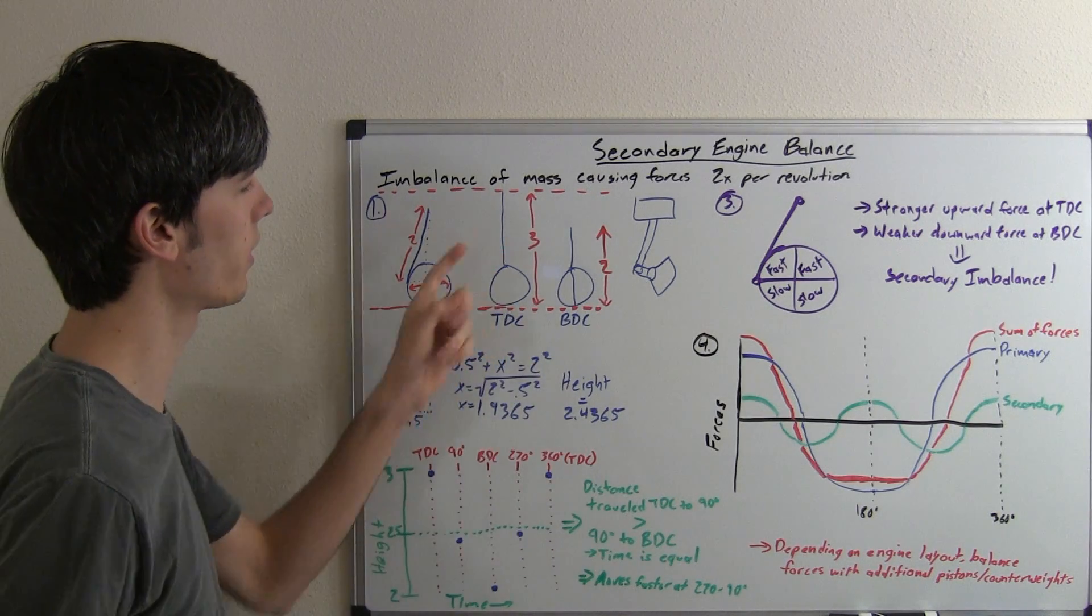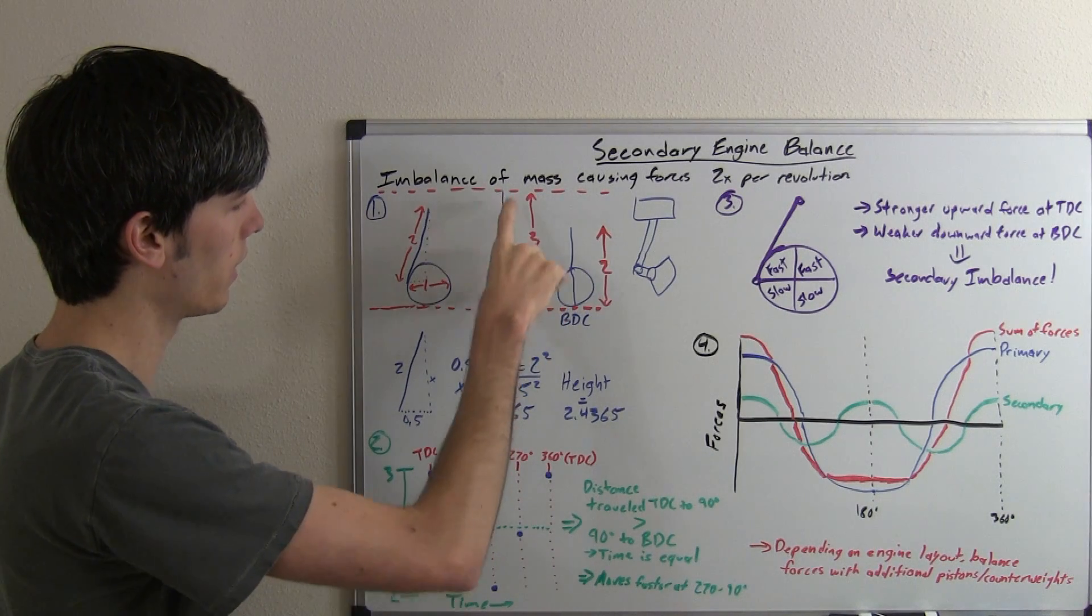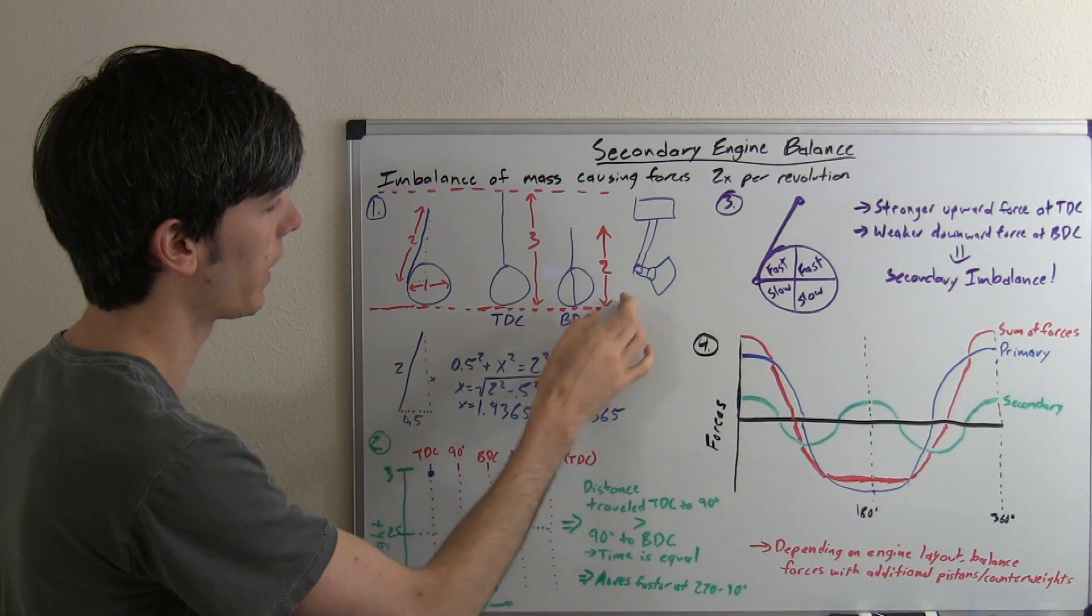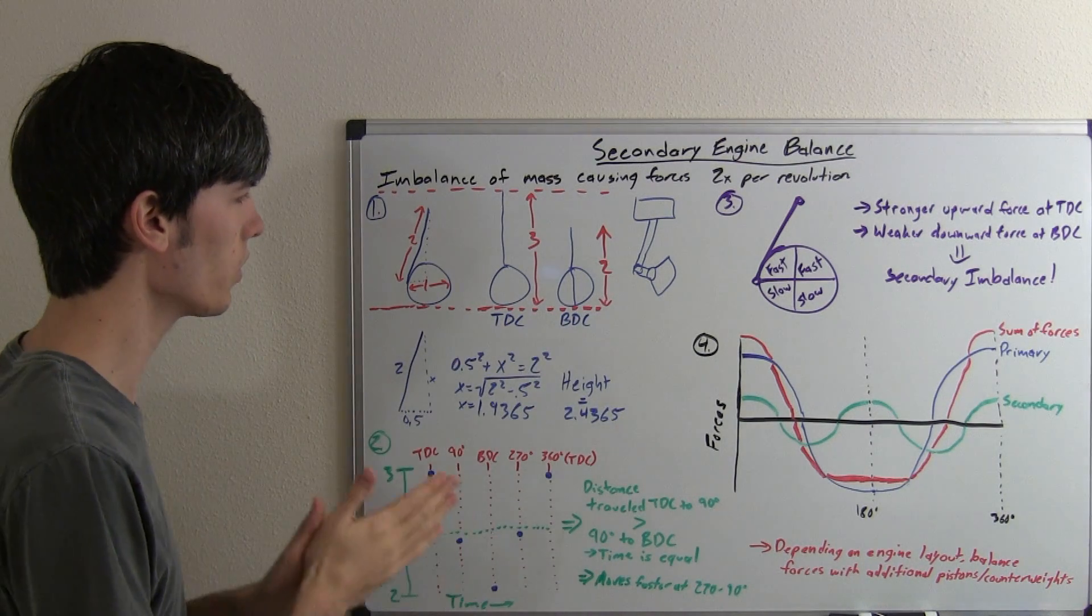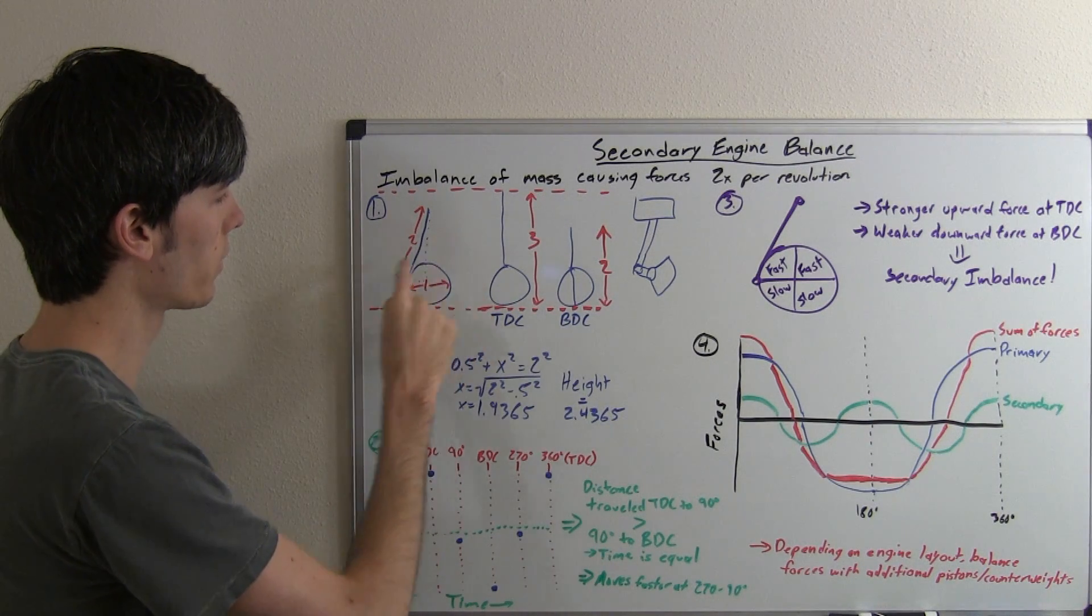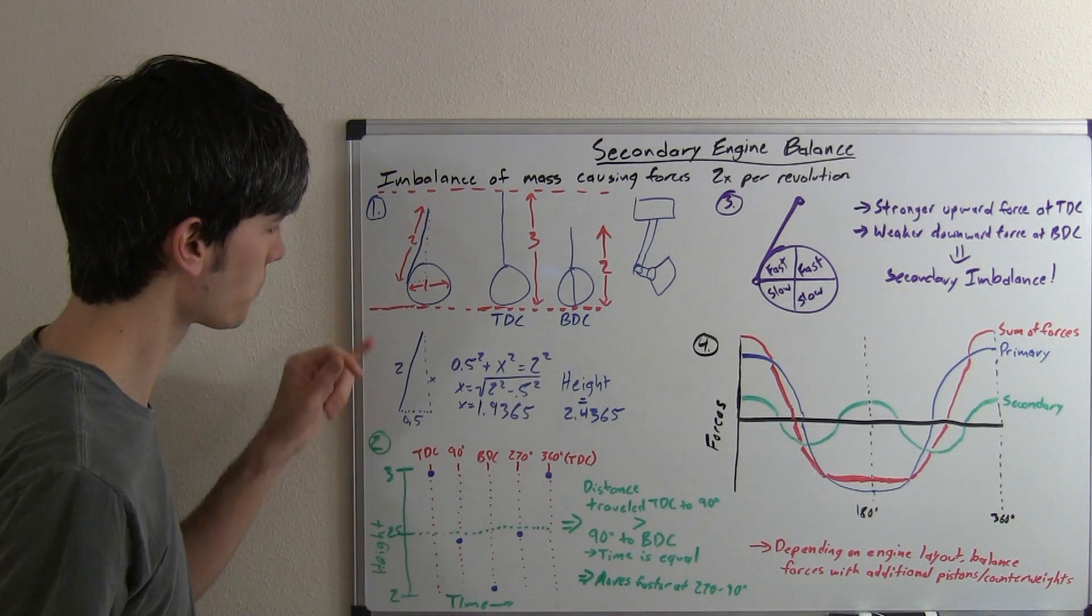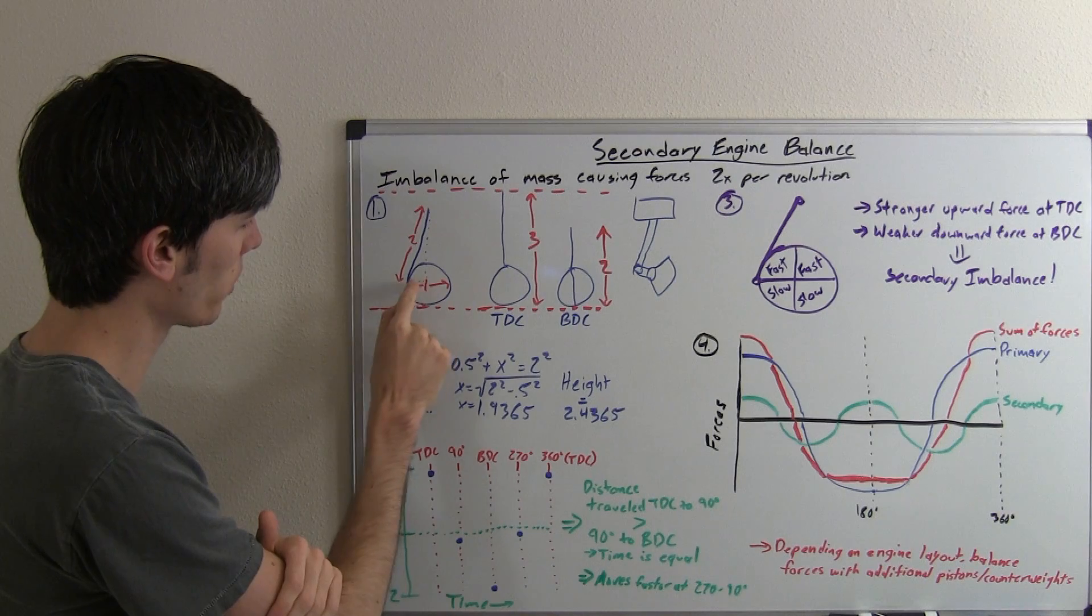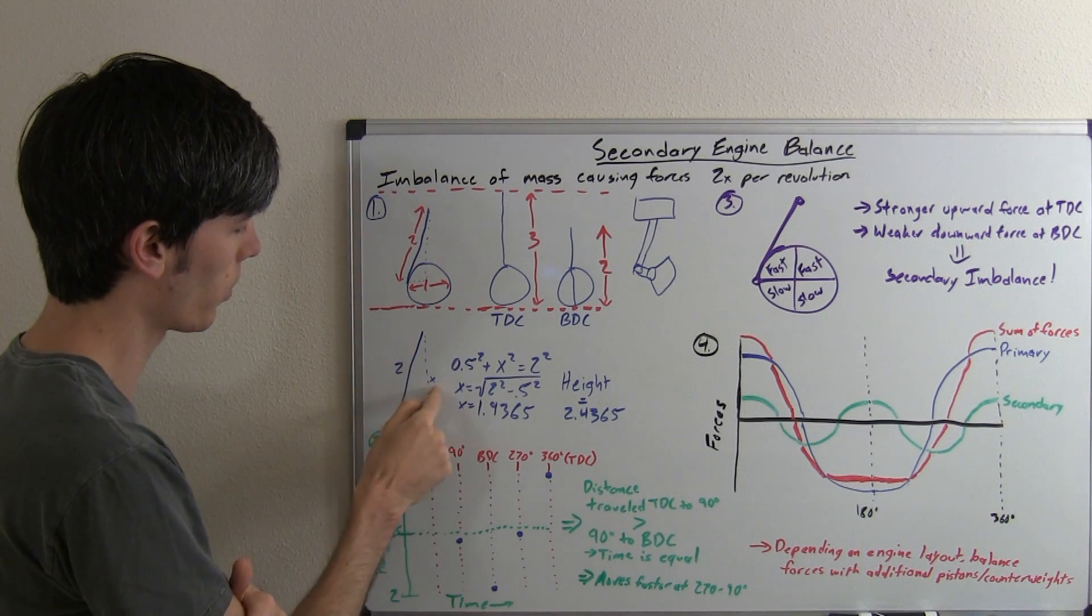So at top dead center, this means that this whole device here is going to have a height of 3, and at bottom dead center a height of 2. So we want to find out what is its height halfway up. And so what we're going to do is we're going to say, okay, well we've got 0.5 here, we've got 2 here, and we want to find x.